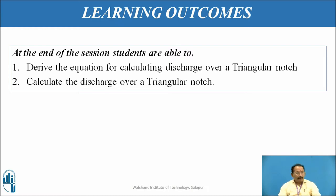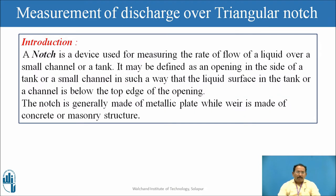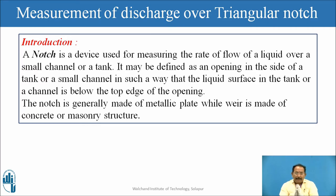What is a notch? A notch is a device used for measuring the rate of flow of a liquid over a small channel or a tank. It can be located at the side of the tank or channel to measure the discharge. It is generally made up of a thin metallic plate, while the weir is made up of concrete or masonry structure.